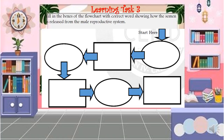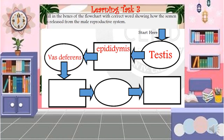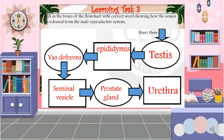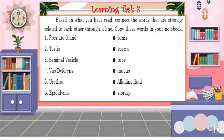The flowchart answer starts with the testes, next is the epididymis, then the vas deferens, followed by the seminal vesicle, then the prostate gland, and down to the urethra. Next, connect the words that are strongly related to each other through a line, copying the words in your notebook.